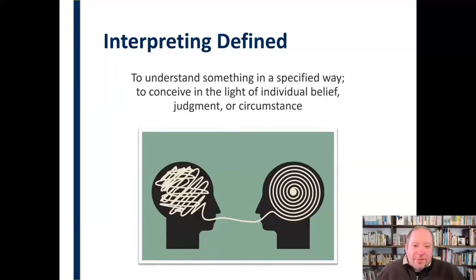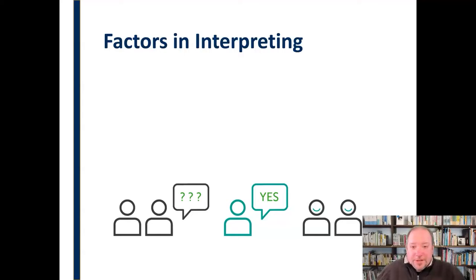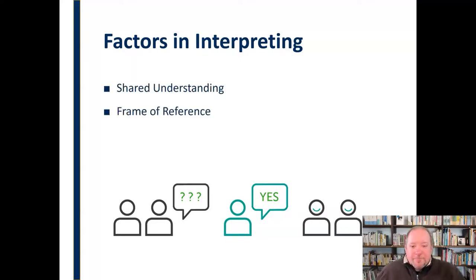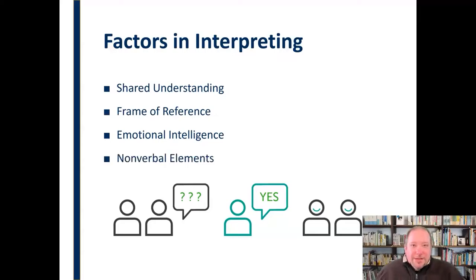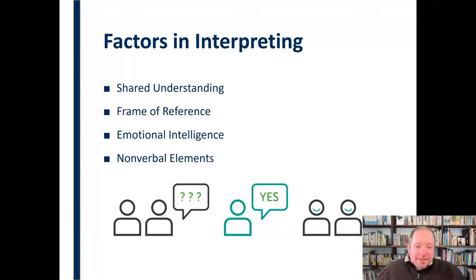There are a variety of things that are factors in interpreting. We're going to take a look at a few of the major aspects in subsequent videos, including shared understanding, frame of reference — which is very important in this aspect — emotional intelligence and emotion in general, and nonverbal elements, which play a huge role in interpretation as well. We'll examine each of these things respectively as we look at the interpreting aspect of the HURRIER model.